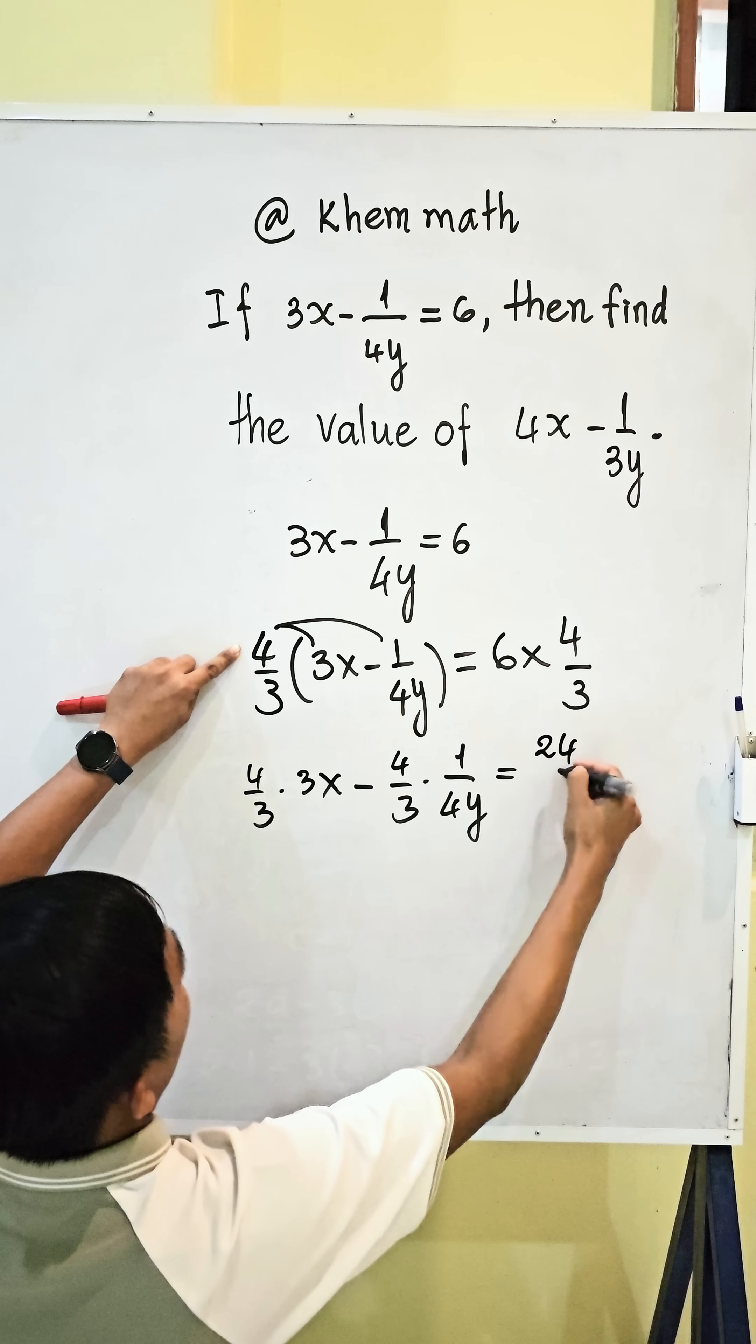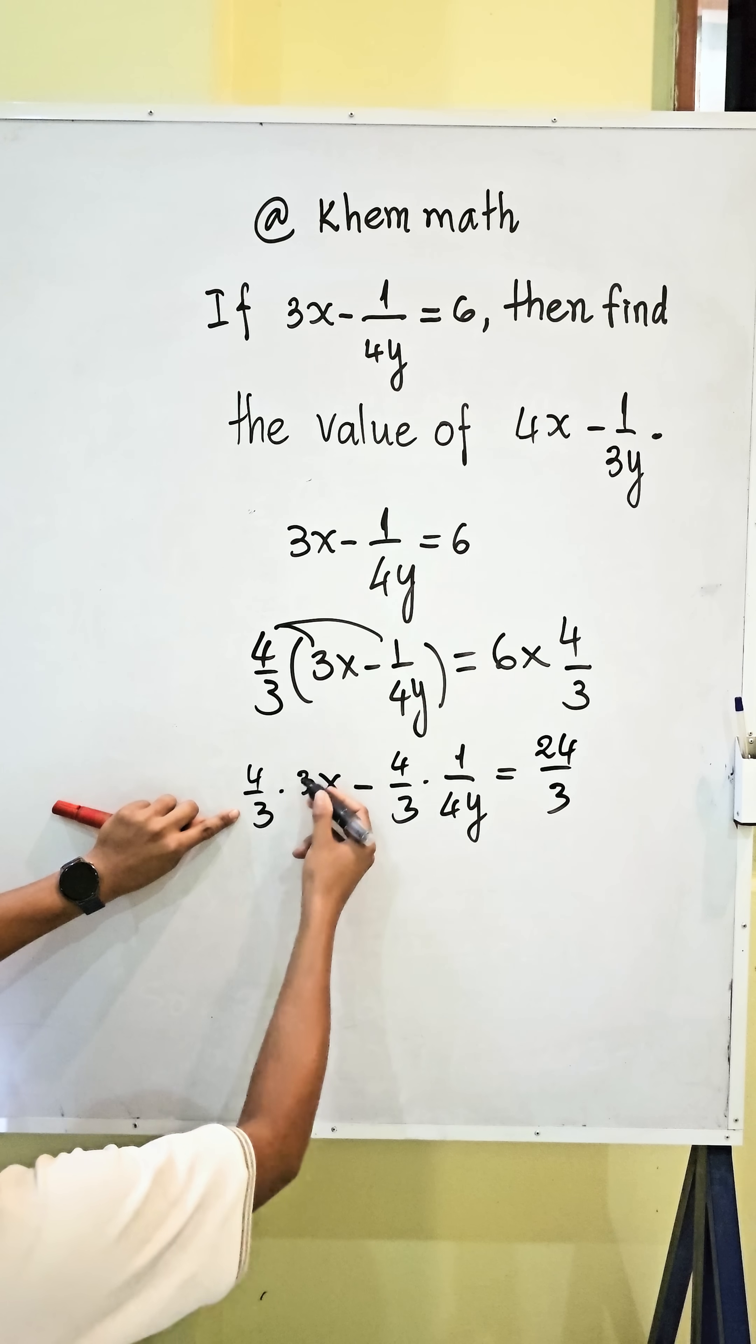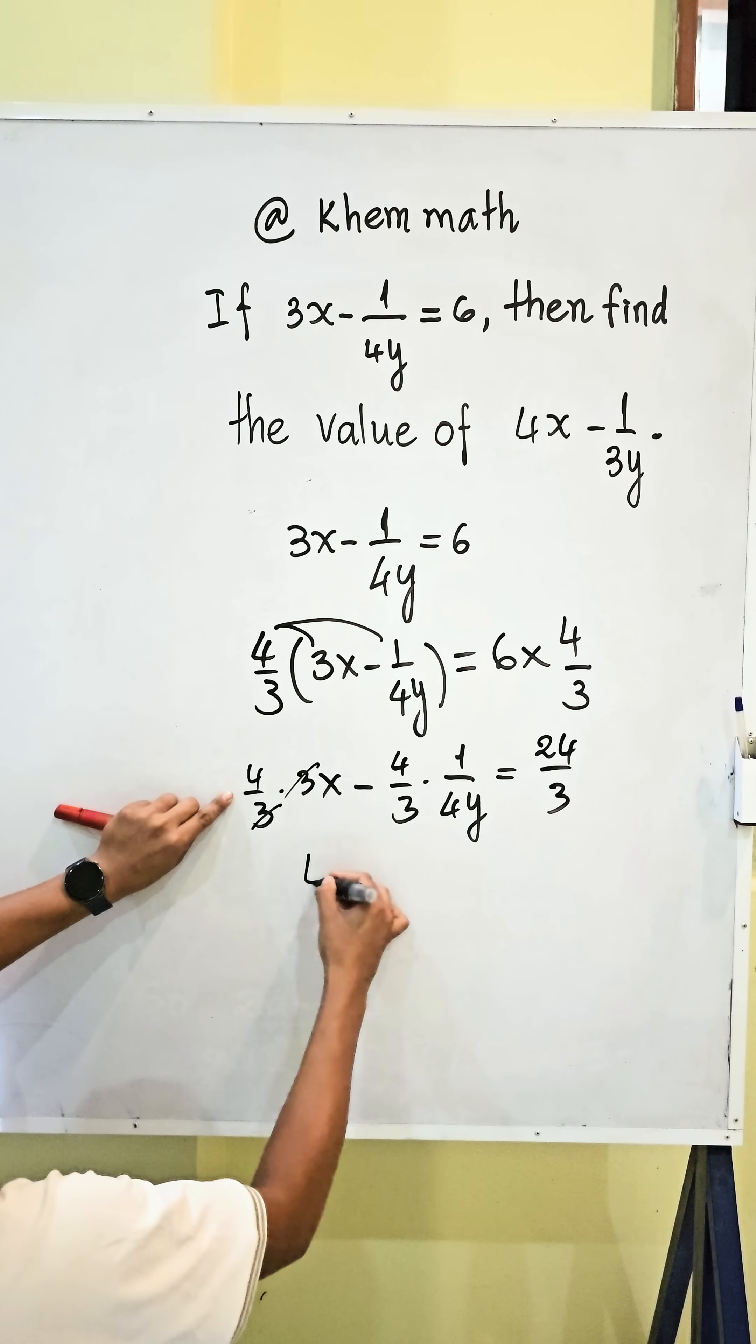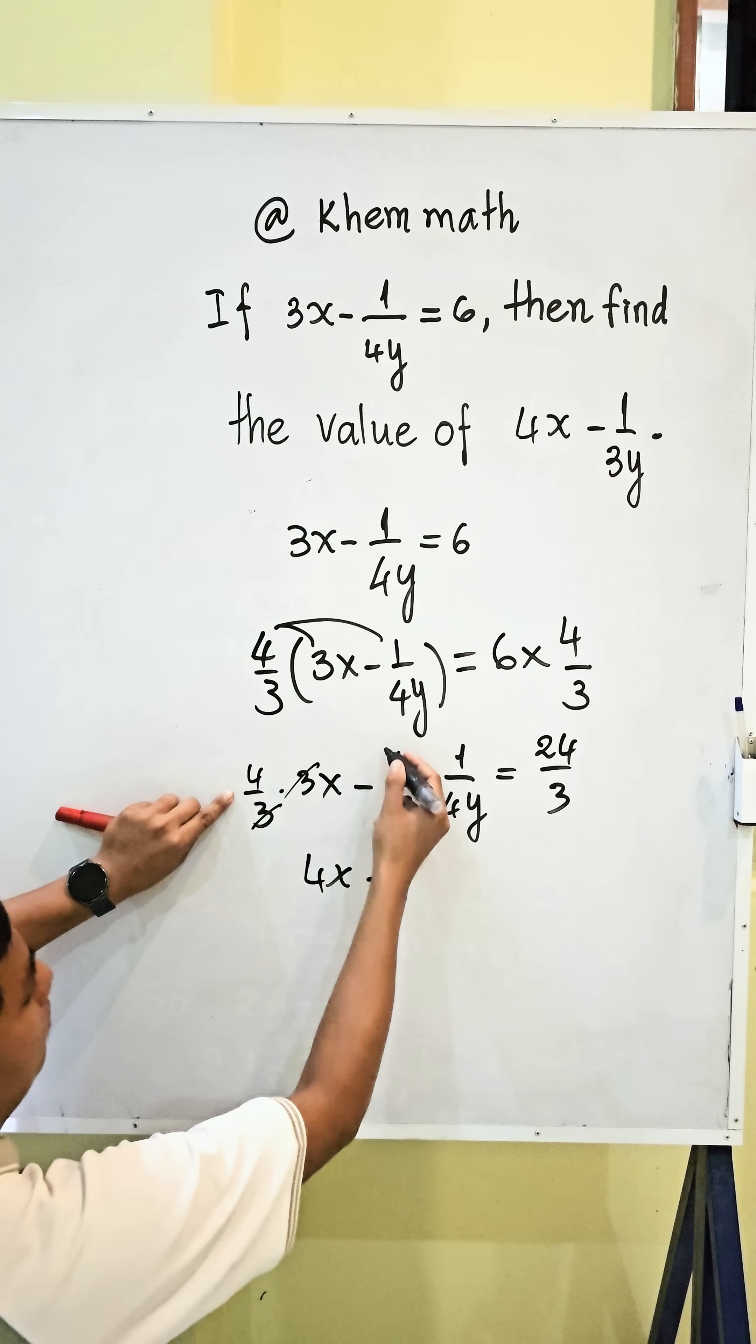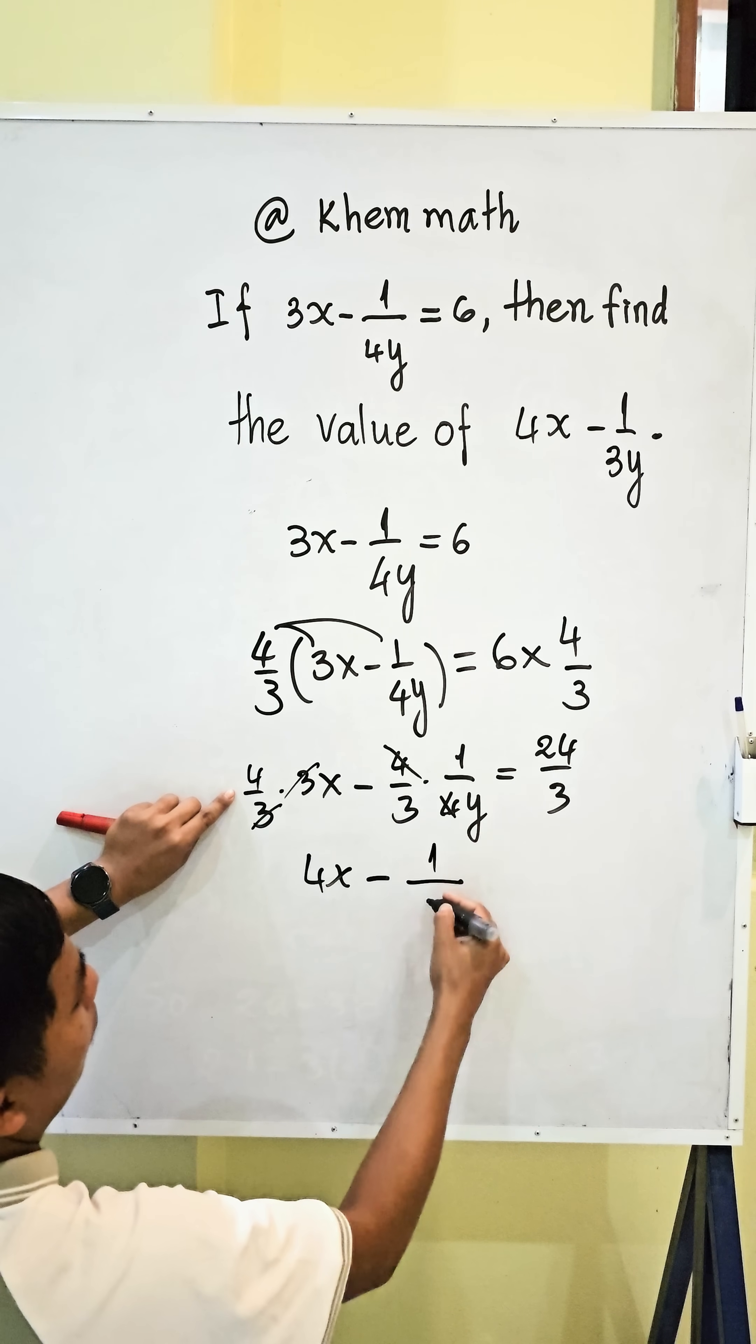we get this 24 divided by 3. And here, we simplify 3, we get this 4x. And minus, we simplify 4, we get this 1 divided by 3y.